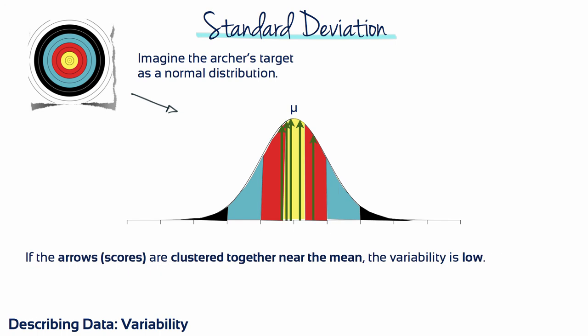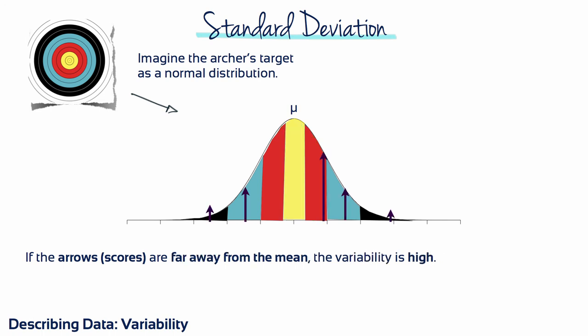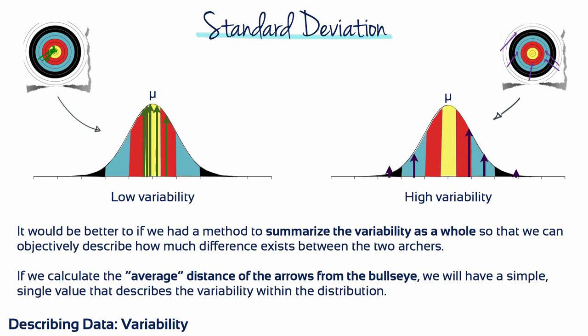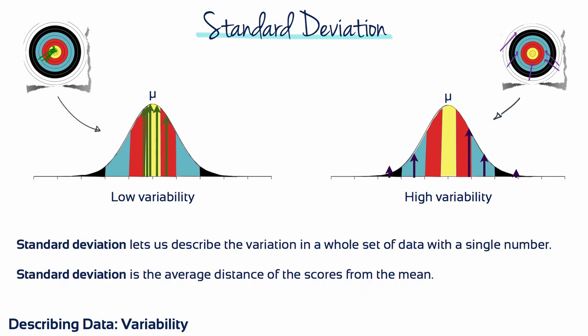If the arrows, or scores, are clustered together near the mean, the variability is low. If the arrows, or scores, are far away from the mean, the variability is high. It would be better if we had a method to summarize the variability as a whole, so that we can objectively describe how much difference exists between the two archers. If we calculate the average distance of the arrows from the bullseye, we will have a simple, single value that describes the variability within the distribution. Standard deviation is the average distance of the scores from the mean.